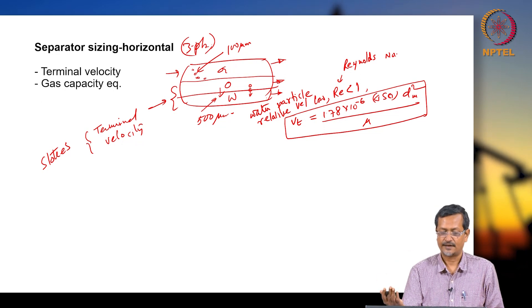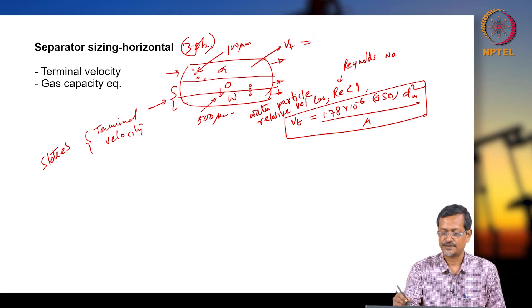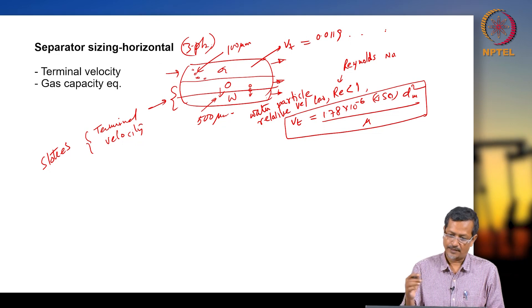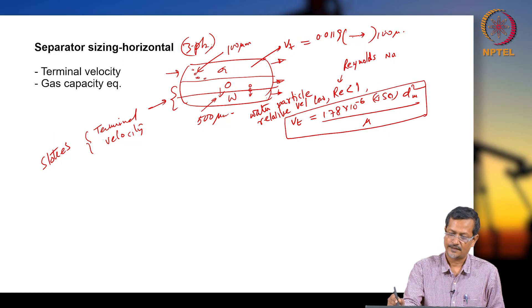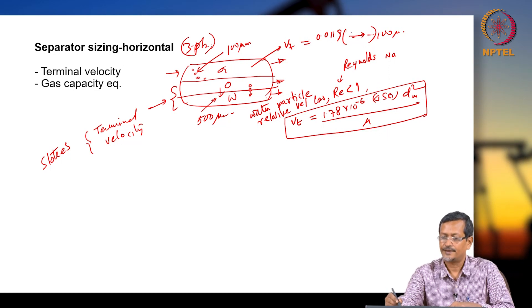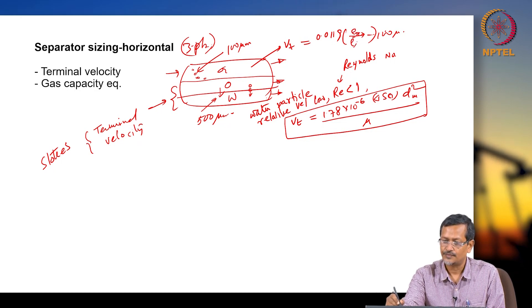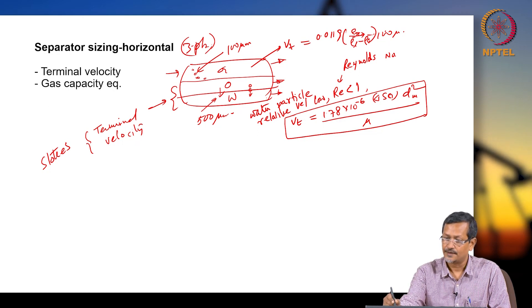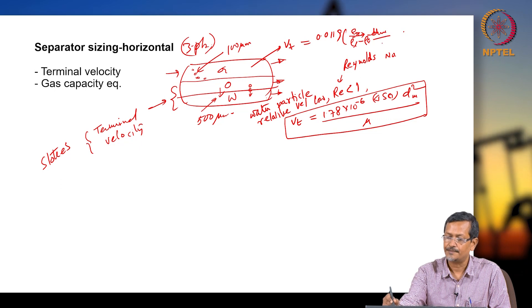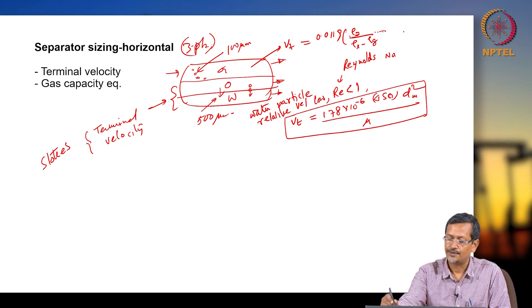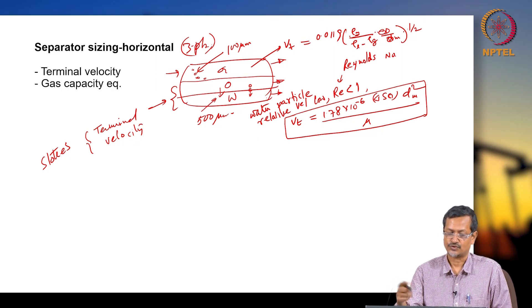But if the Reynolds number is higher, Vt will be different. In that case you use the formula: Vt = 0.0119 × [ρg × (ρl − ρg) / (cd × dm)]^(1/2). This is your terminal velocity when Stokes law is not holding.